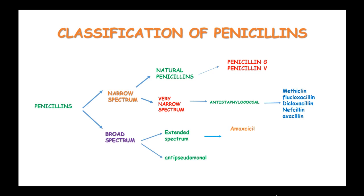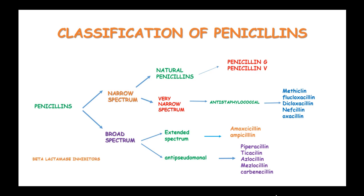Extended spectrum penicillins include Amoxicillin and Ampicillin, and anti-pseudomonal penicillins include Piperacillin, Ticarcillin, Azlocillin, Mezlocillin and Carbenicillin. We also have beta-lactamase inhibitors such as clavulanic acid, sulbactam and tazobactam.